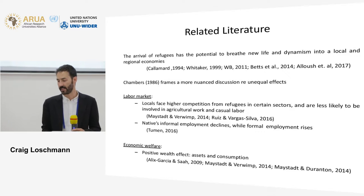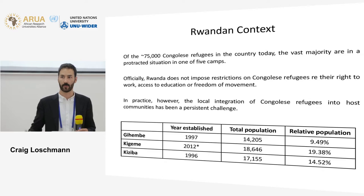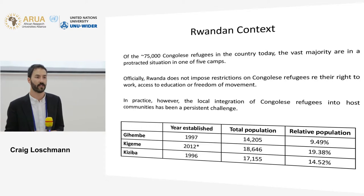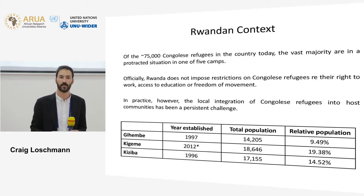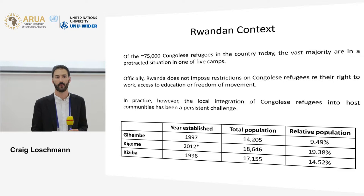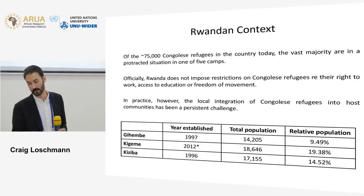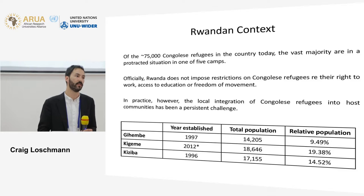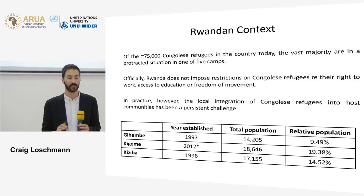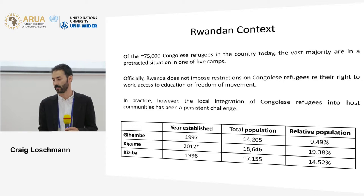To give you an idea of the Rwandan context: everyone understands more or less the context of Rwanda and the genocide and their own issues of displacement, but Rwanda itself has taken in quite a few refugees over the years. Today there are about 75,000 Congolese refugees in the country, and the vast majority are in a protracted situation — meaning they've been living there for more than five years — in one to five camps. We'll specifically be looking at three camps.